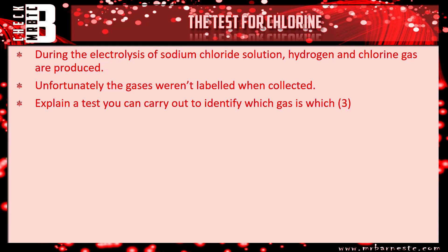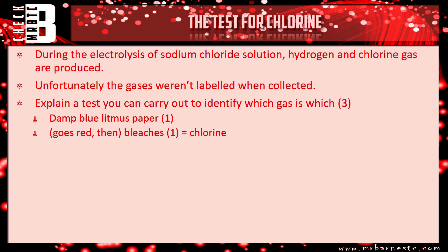Okay let's see how you've done. So nice and straightforward — the test is use damp blue litmus paper. That gets you one mark, and then the second mark is saying that it bleaches it. Remember, goes red is part of the answer but you don't always need that. So you get one mark for damp blue litmus paper and one mark for bleaches it, and that proves that you've got chlorine present. If it doesn't go bleached then it's not chlorine, therefore if you know one of them is hydrogen and one is chlorine, the other one has got to be hydrogen.